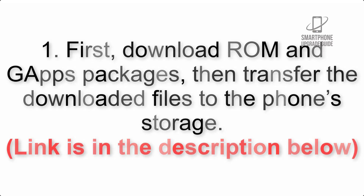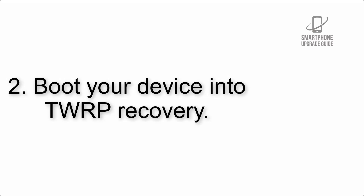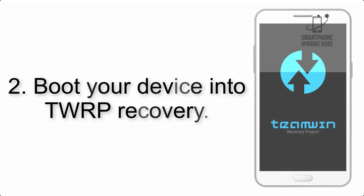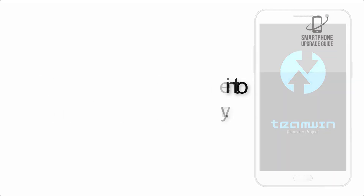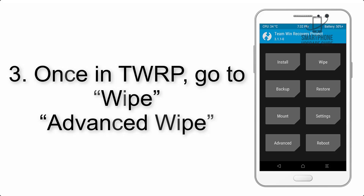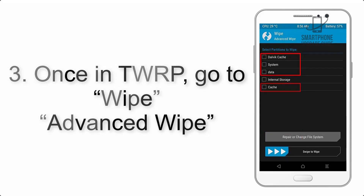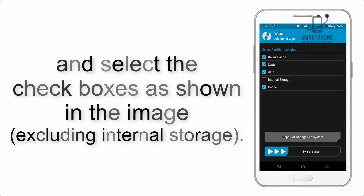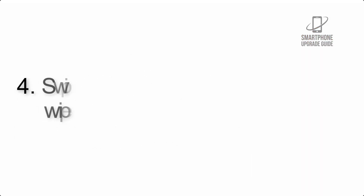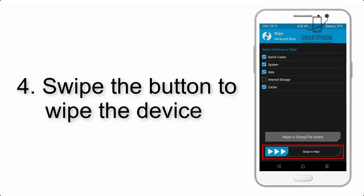Link is in the description below. Step 3: boot your device into TWRP recovery. Once in TWRP, click on Wipe, then Advanced Wipe, and select the checkboxes as shown in the image, excluding internal storage.